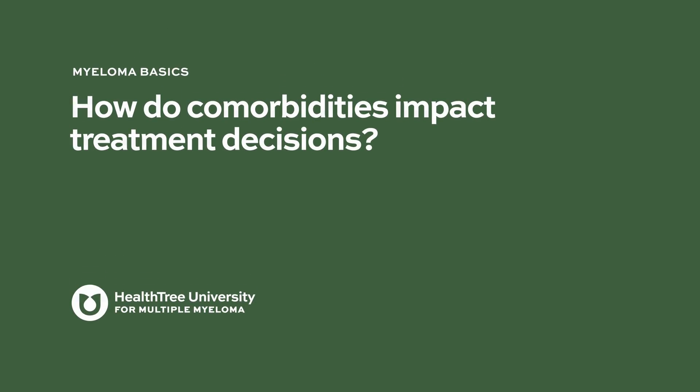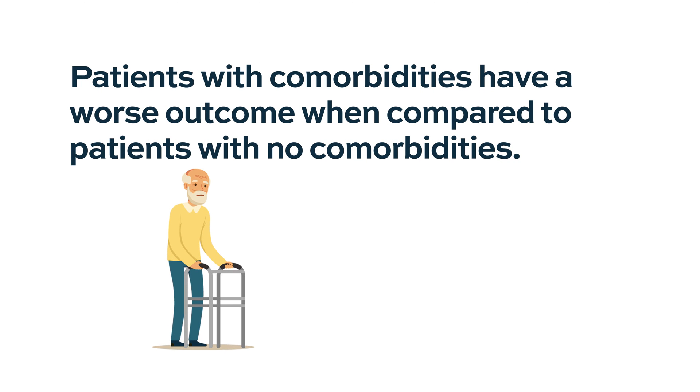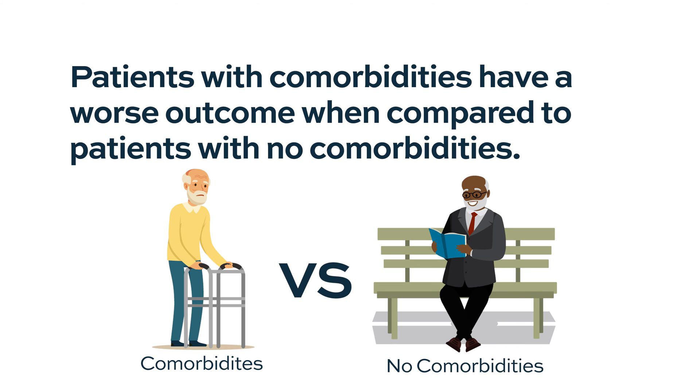That's a lot of patients with comorbidities early in their myeloma history, because comorbidities also develop throughout their history due to treatment. How do comorbidities impact treatment decisions? You will have worse outcomes — the hazard ratio was about 2 in overall survival, which is quite a lot.